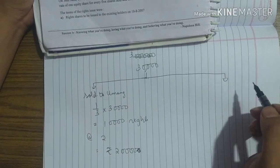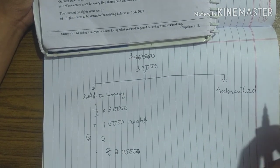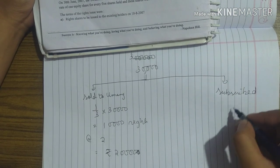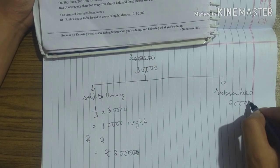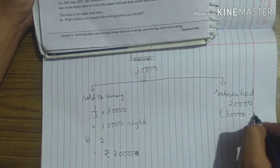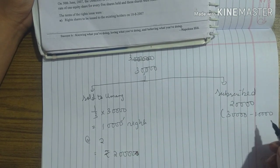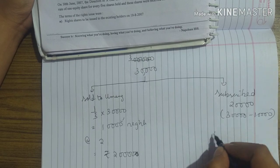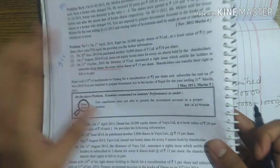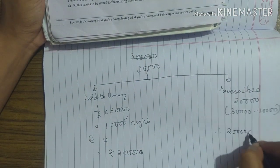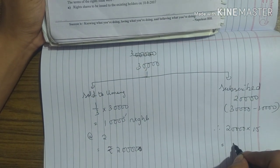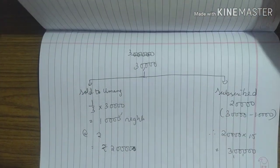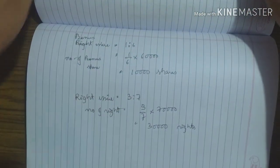The remaining rights subscribed = 30,000 − 10,000 = 20,000 rights. The subscription price is ₹15 per share, so 20,000 × 15 = ₹3,00,000 paid. Now we can clearly complete the investment account using these figures.